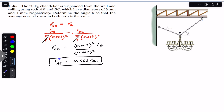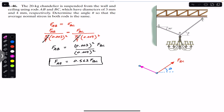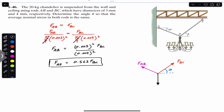Since we have two unknowns we need another equation. Drawing the free body diagram at point B, we have the tension force in rod BC — that is F_BC making angle theta — and then we have the force in rod AB, F_AB, at 30 degrees. The weight of the chandelier acts vertically downward: 20 kg times 9.81 N/kg.